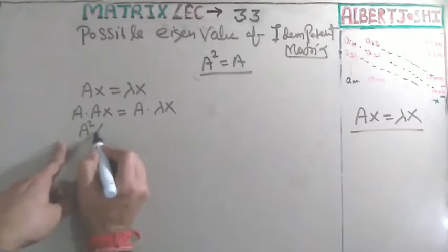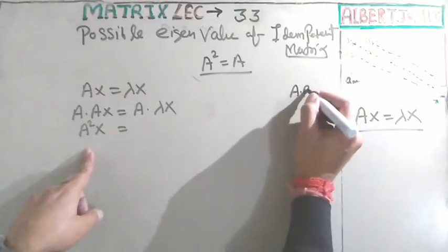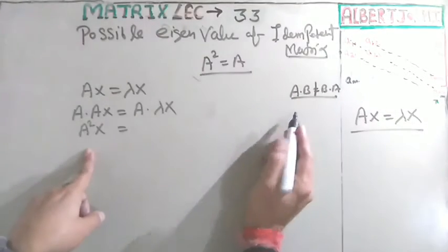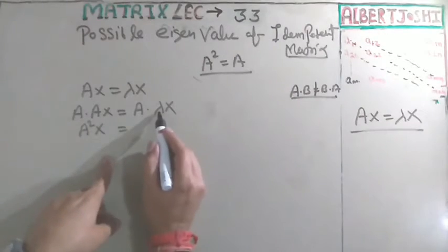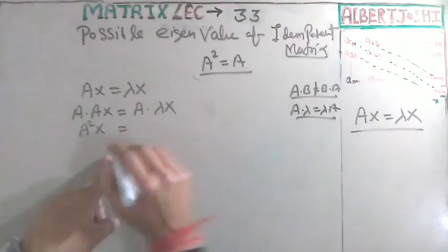A into A equals A²x. You know that this is a scalar value. You cannot say that in matrix AB equals B times A, this is wrong in matrix. But this is a scalar value. For a scalar, Aλ equals λA. Both are the same, no problem.